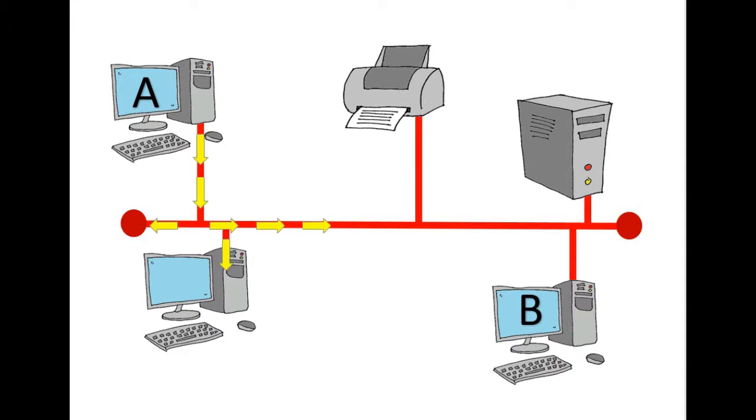Computer A wants to send a message to computer B. Computer A would send the message down its own individual cable to the main bus. From here it gets split and is sent in both directions.